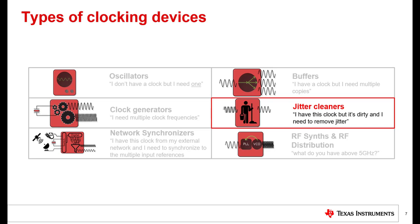Jitter cleaners are a special type of clock generator that, in addition to generating multiple frequencies, can also generate clean clocks from a noisy input clock. Network synchronizers are a special type of clock generator that has the ability to synchronize multiple output clocks to each other or to the input clock. Synthesizers use high-performance PLLs to generate very high frequency clocks.